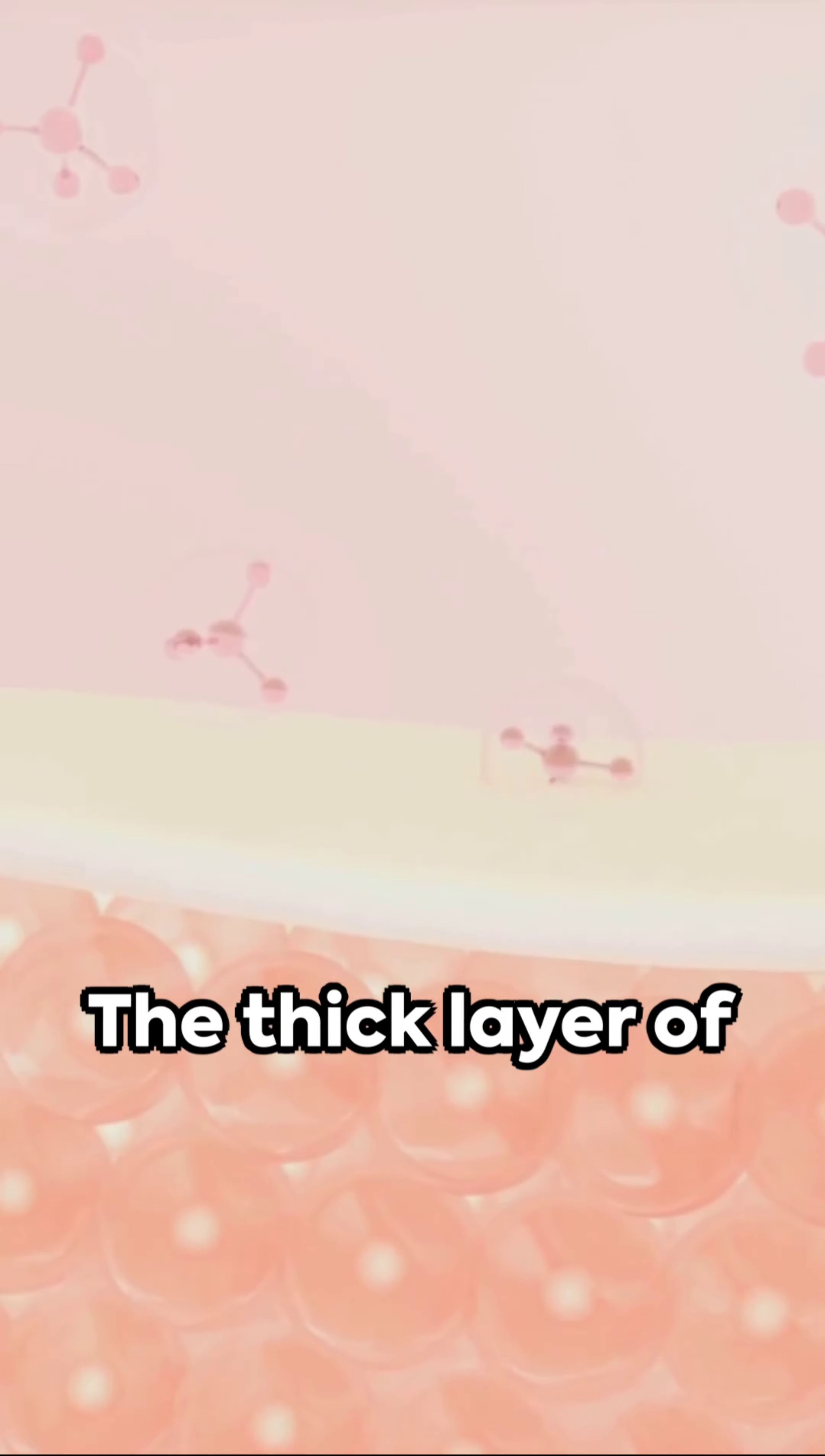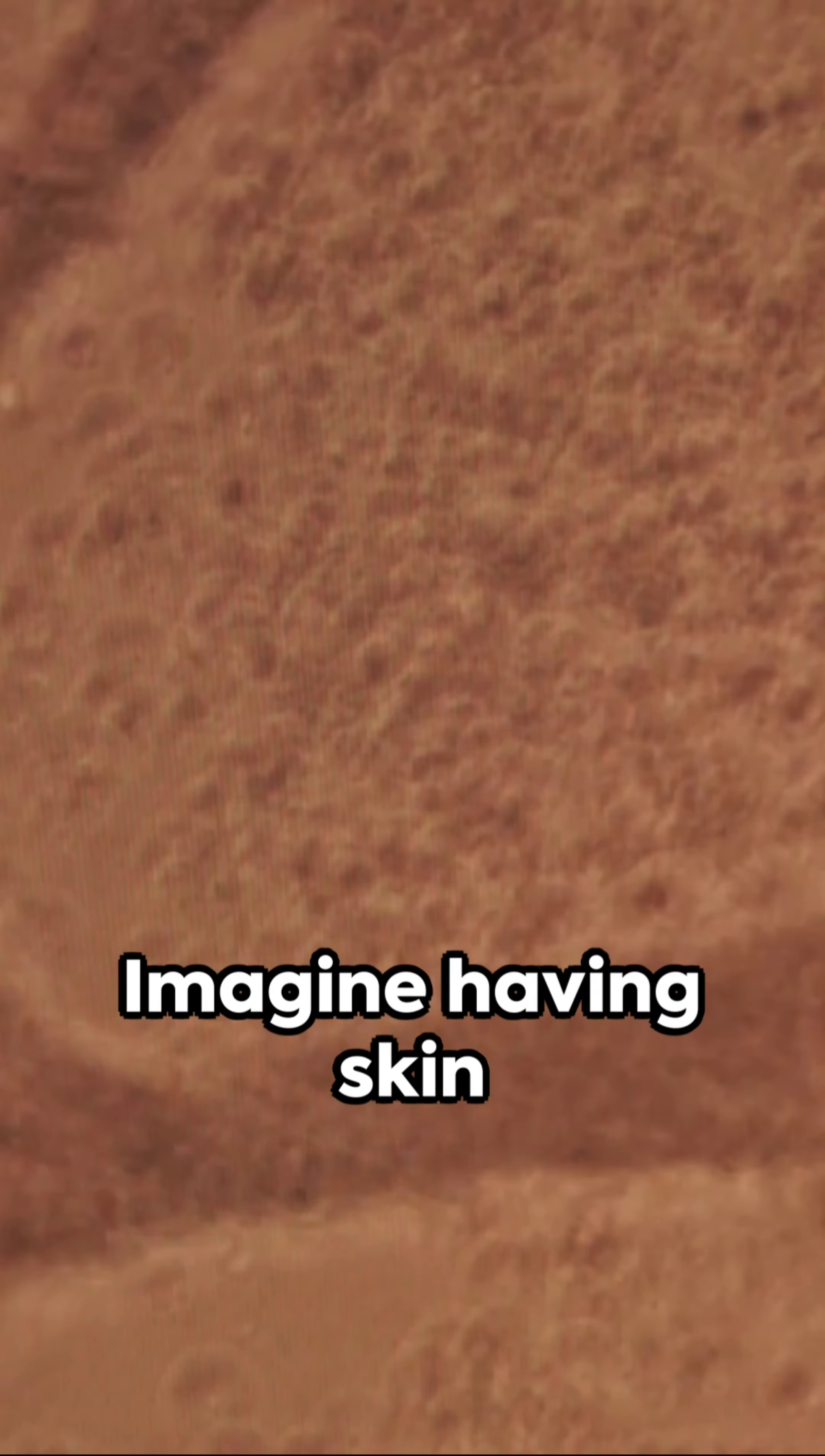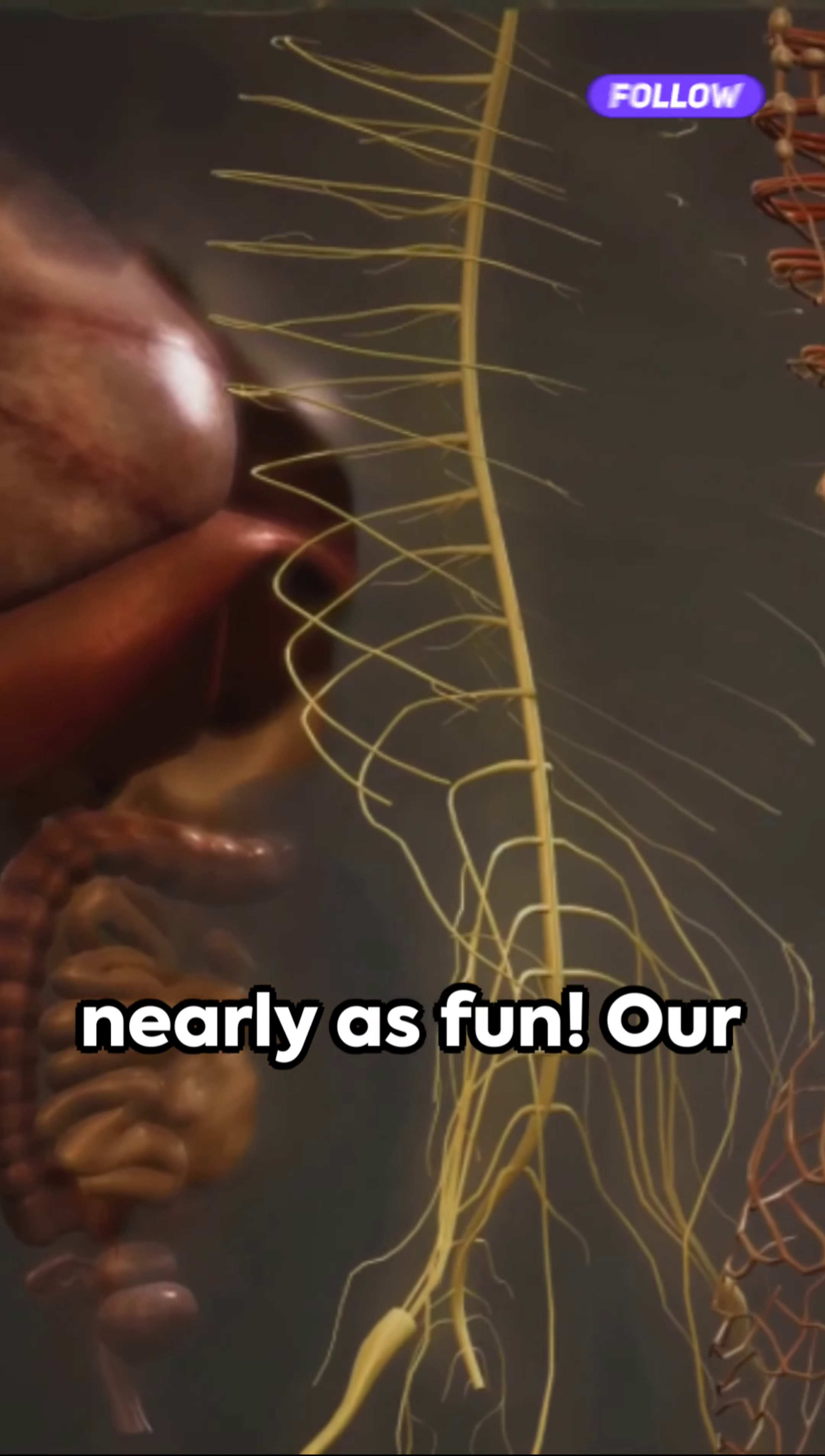The thick layer of dead keratin cells on our hands and feet, subjected to wear and tear, might explain why these parts wrinkle and not others. Imagine having skin as thin as our backs on our palms. Sports wouldn't be nearly as fun.